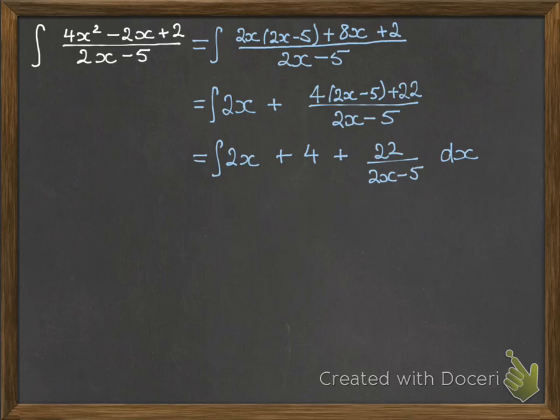As soon as we've got a piece on the end that's just a number over a single term of x, as in like no powers of x, then we're good to go. So we've got x squared from the first term when we integrate that. Then we get 4x. And then we've got 11 log 2x minus 5 for the last term.